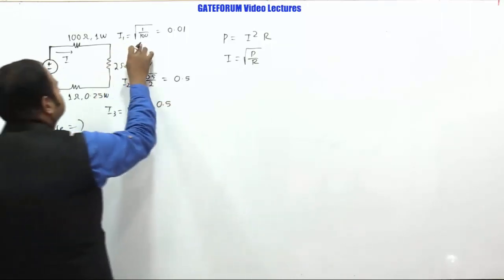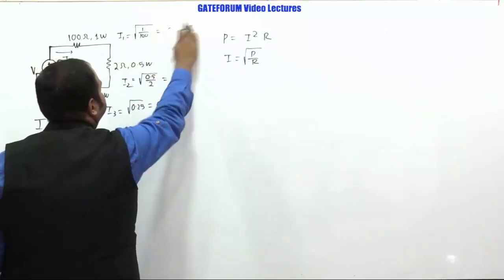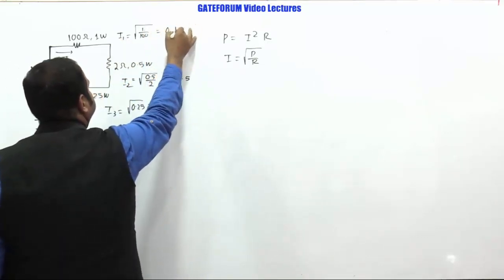So I did a mistake. This would be, if I remove this square root, so this will be coming 1 by 10. 1 by 10 is 0.1, not 0.01. It will be 0.1.